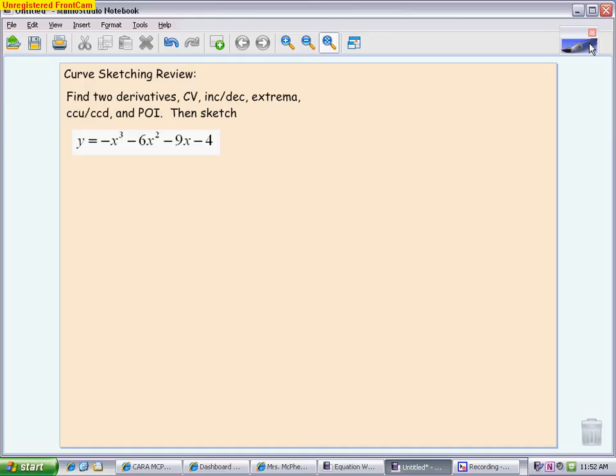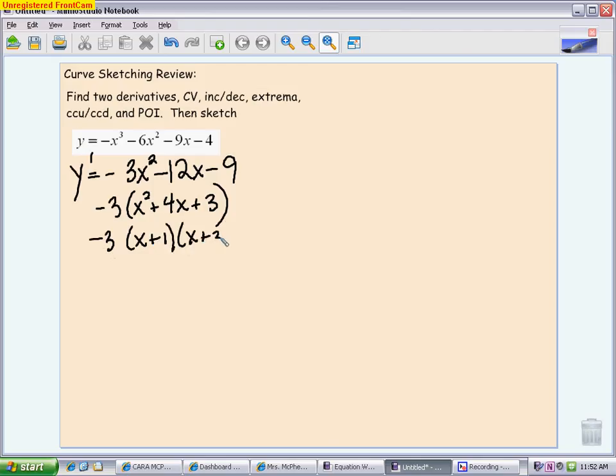You always want to start these problems by taking the derivative. Be really careful because it affects everything below it. I want to figure out when the derivative equals 0, so I'm going to factor out a negative 3, leaving me with x² + 4x + 3, and then factor further to (x + 1)(x + 3). Our critical values are x = -1 and x = -3.